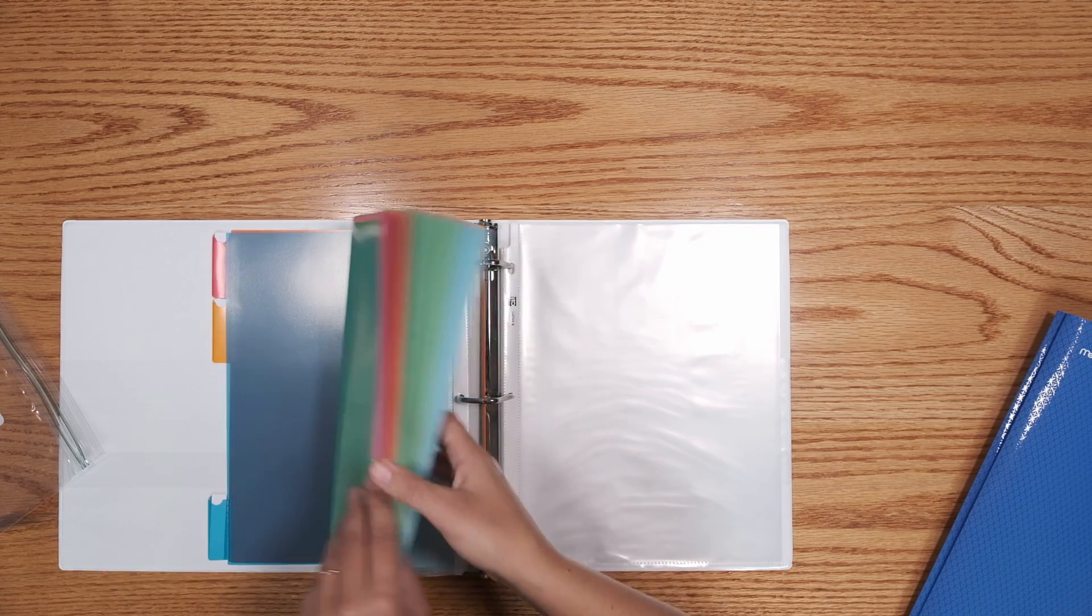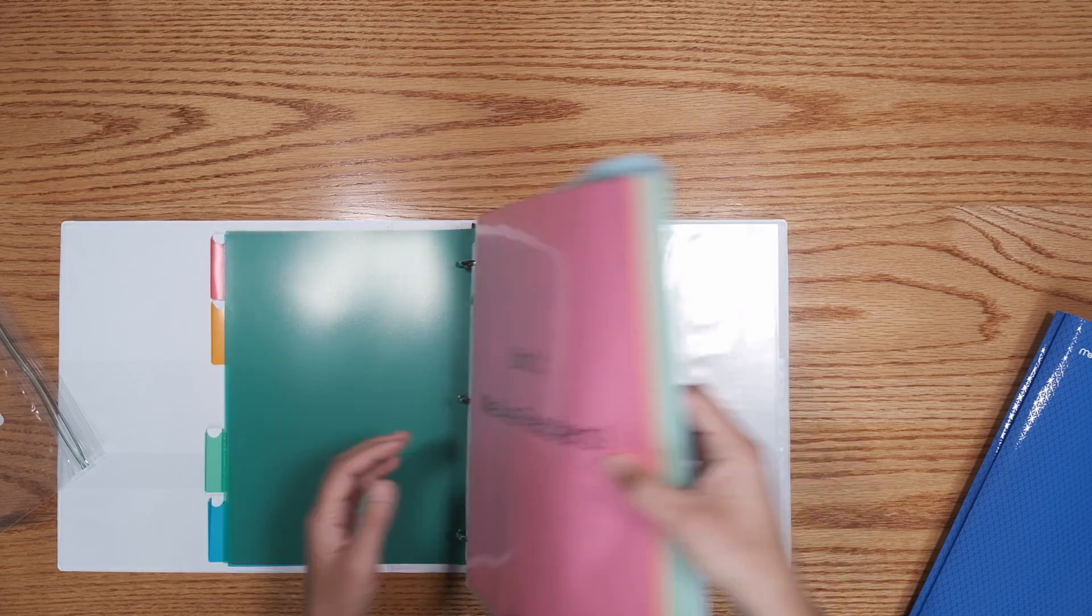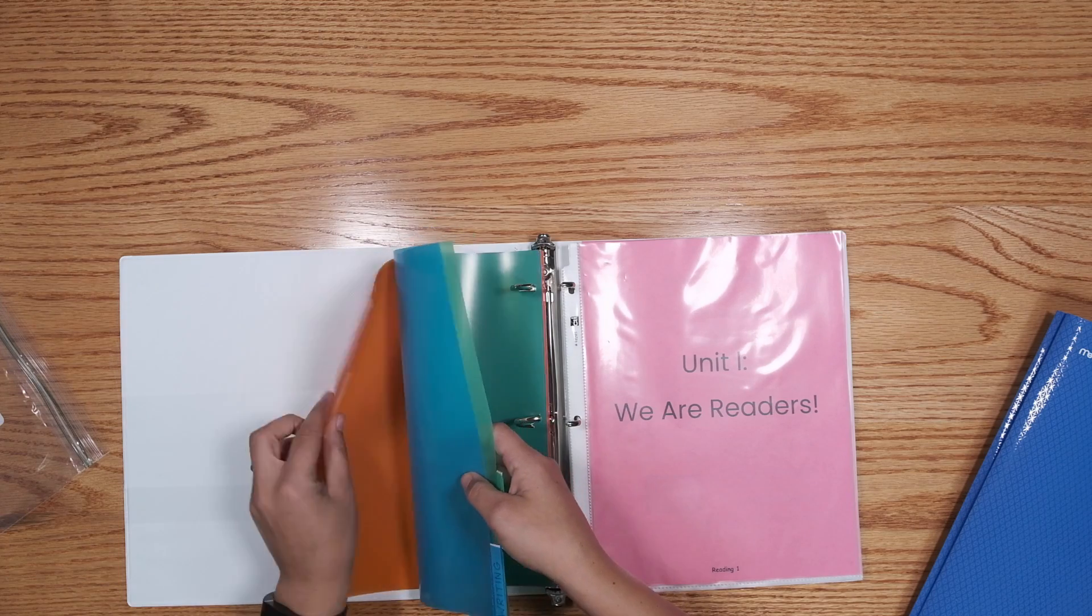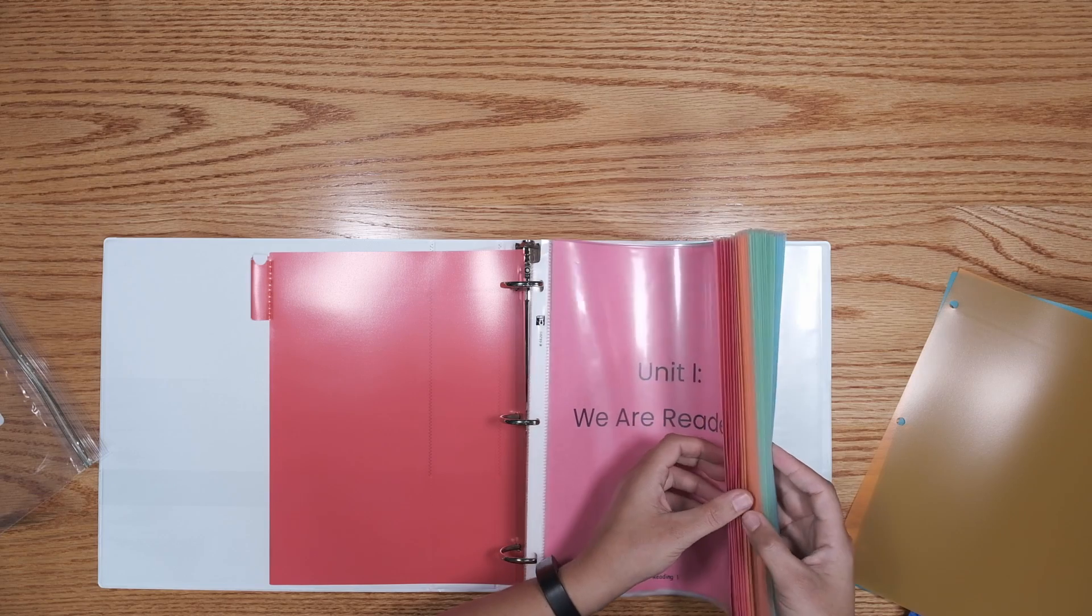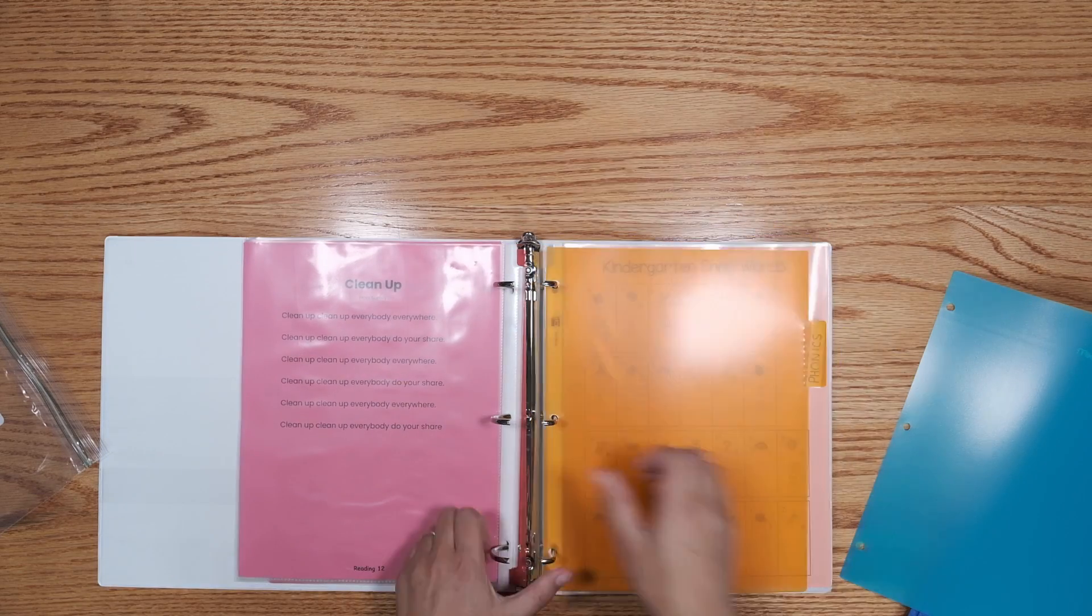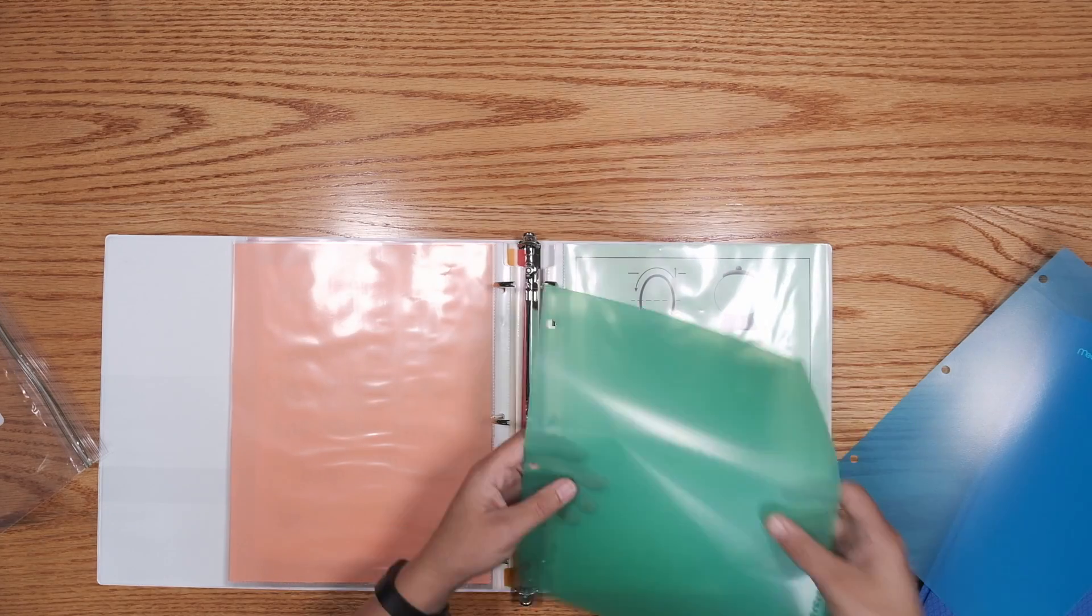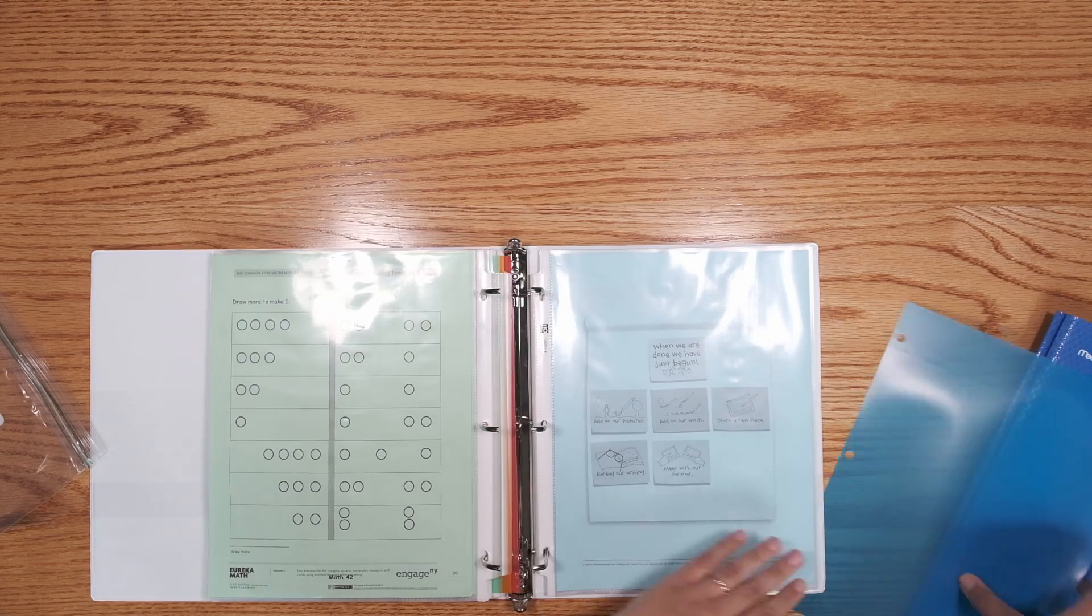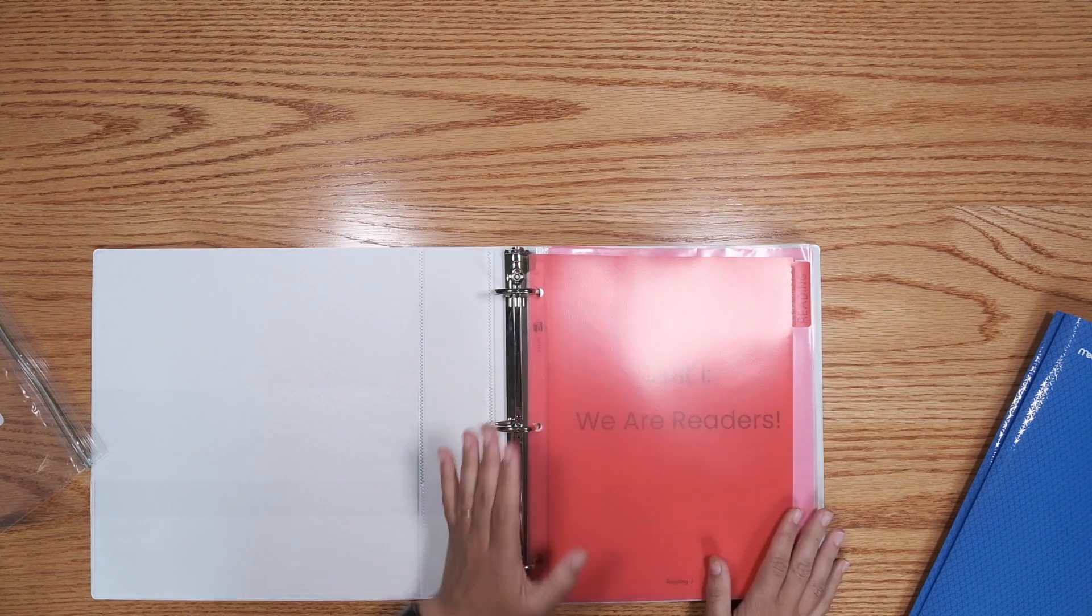Now that I've closed this and it's all ready, I want to use my dividers to make it easy to find the different color sections. So I'm going to take them out and put them between where the colors change. Now my binder is ready.